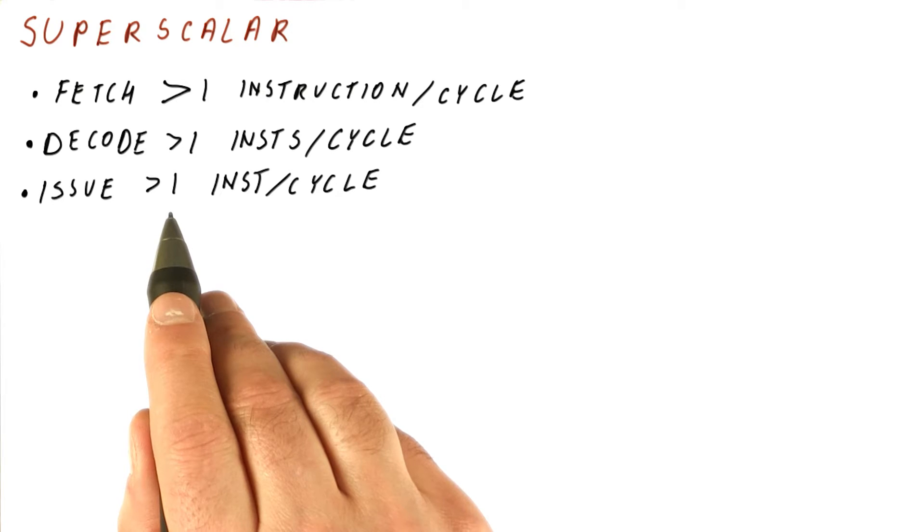So for example, if we're trying to issue up to three instructions per cycle, they still need to be three consecutive instructions. And if one of them cannot issue, then the following ones cannot issue either.